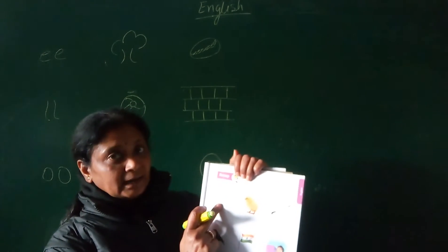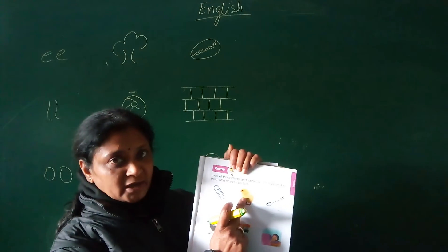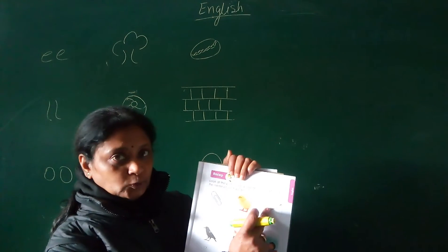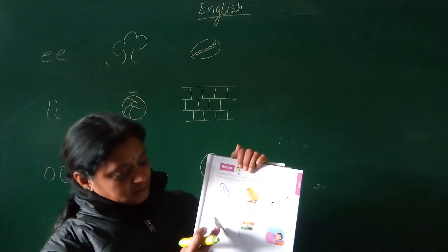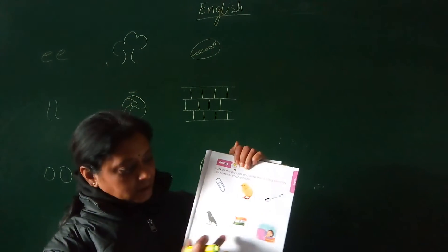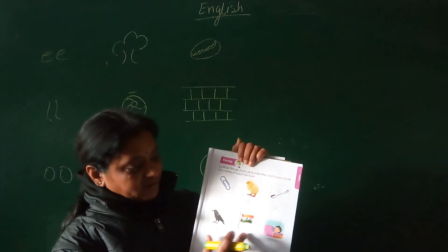So this is what? Clip, so you will write CL. This is chick, CH. This is spoon, spur, SP. This is crow, CR. This is flag, fleur, FL.